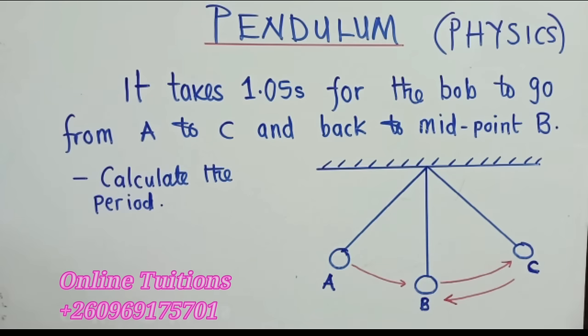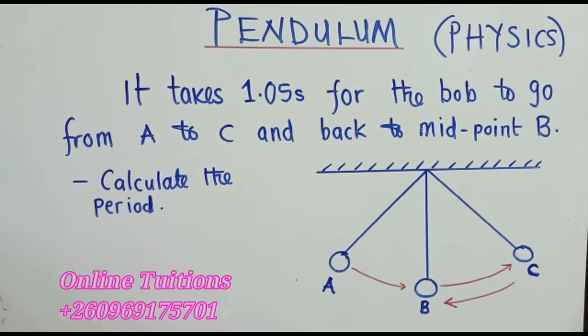So we've got this physics exam question where we've been asked to calculate the period. So the question reads, it takes 1.05 seconds for the bulb to go from A to C and back to midpoint B. Calculate the period.